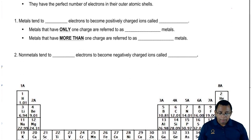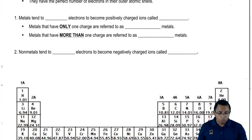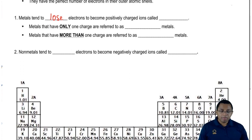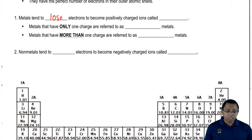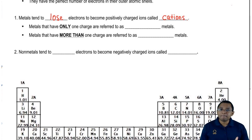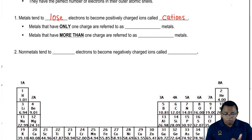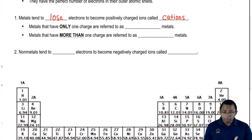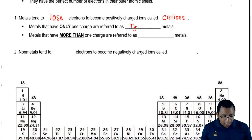Metals tend to lose electrons to become positively charged ions called cations. Metals that have only one charge associated with them are referred to as type 1 metals.